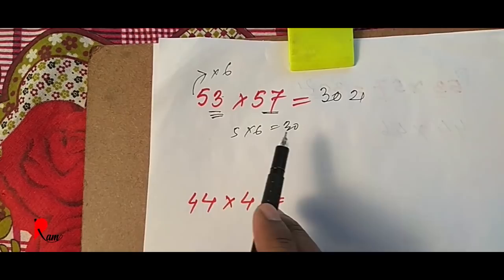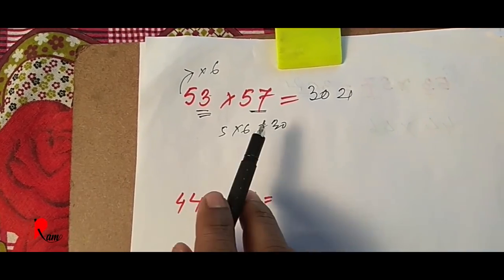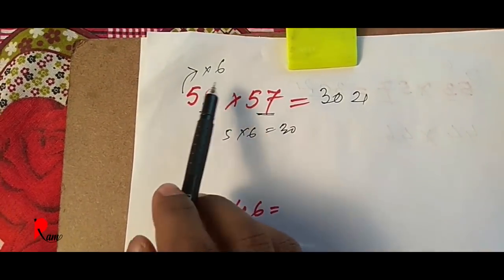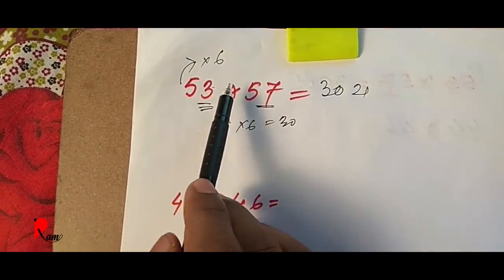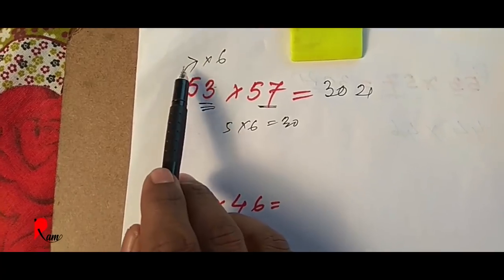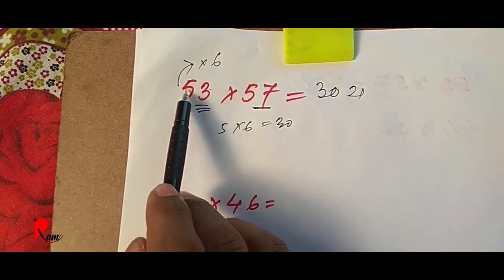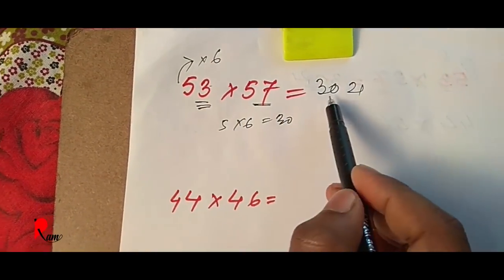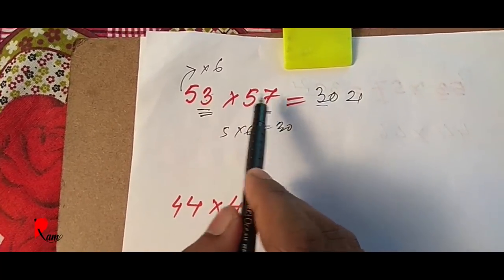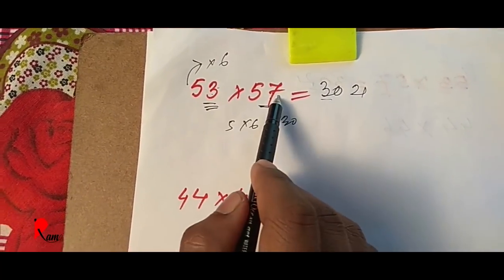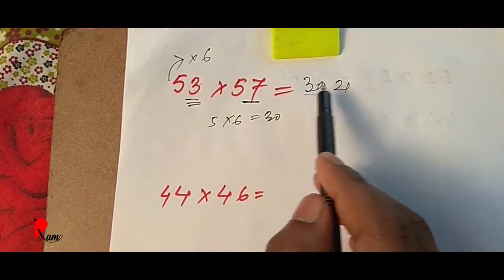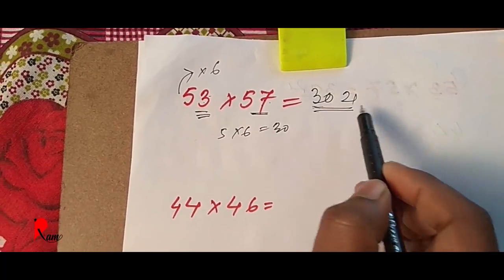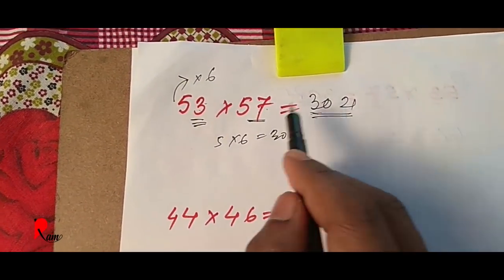And then we can solve 53 x 57. Now we can multiply 5: so one is 5, so one is 6, so one is 30. And by 2, 6 digits — 3 and 7 — it's 21. And easily, 3021 is the result.